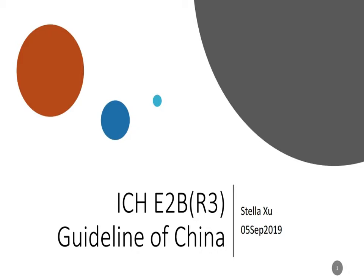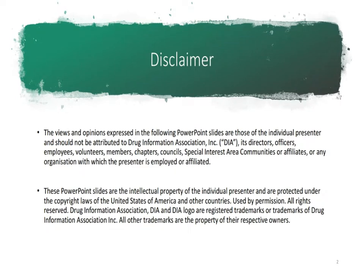China didn't join ICH too long ago — just joined in June 2017. China is still in the process of implementing the ICH E2B R3 guidelines now. There is much more useful information to be shared during the transition period for China, moving from paper reporting to ICH E2B.